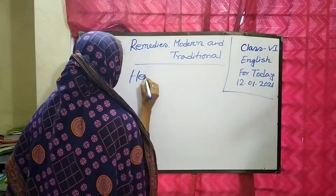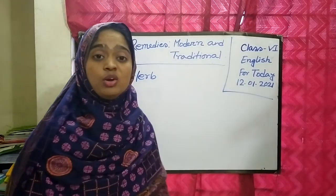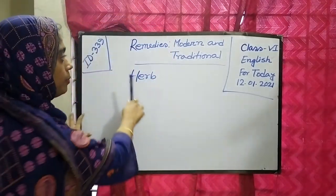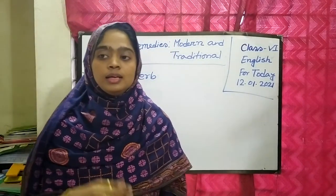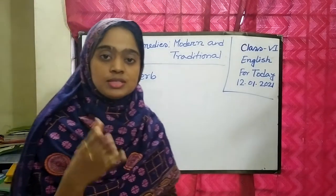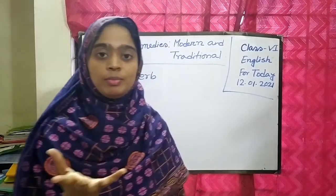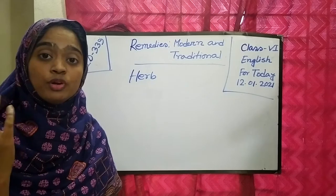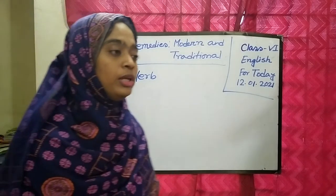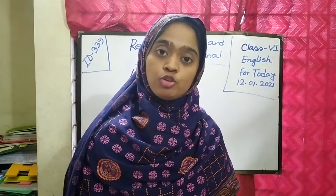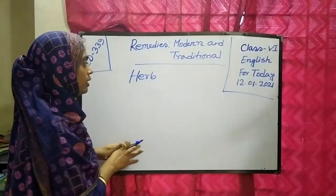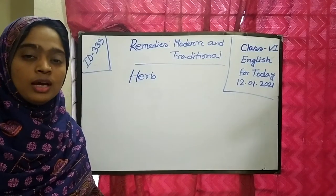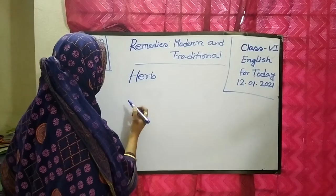First one: Herb. What is the meaning of herb? Any plant with leaves, seeds, or flowers used for flavor — it can be medicine and cooking also. The aloe vera we sometimes use for skin also. Can you make a sentence? Herbs are very useful for our health. Very good.